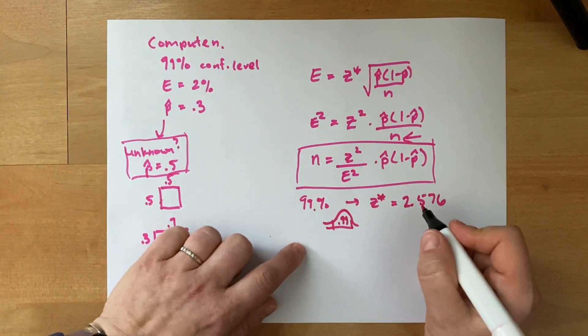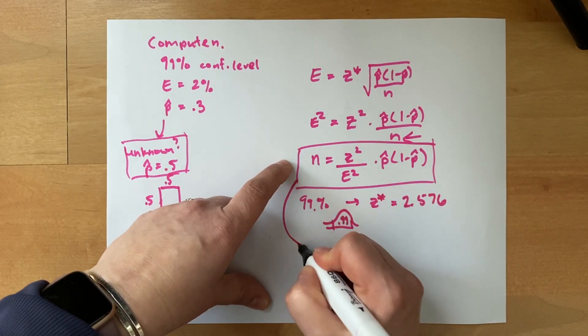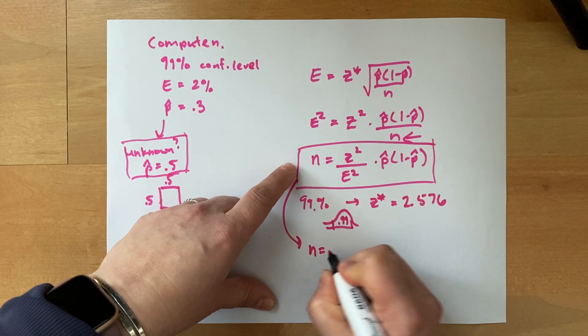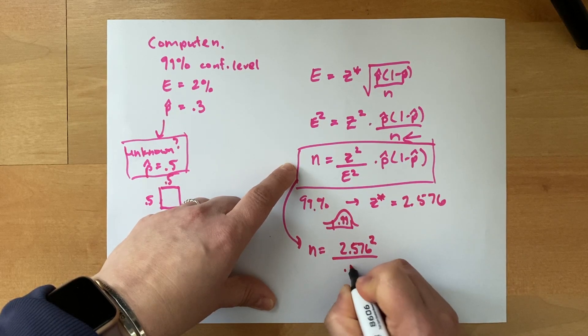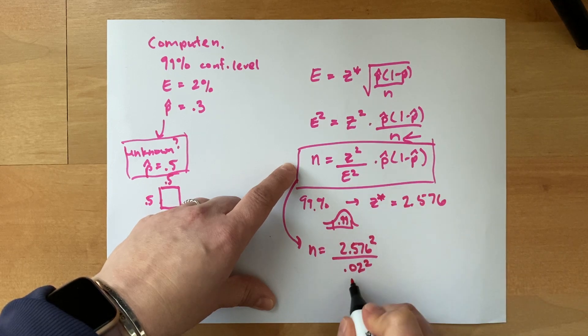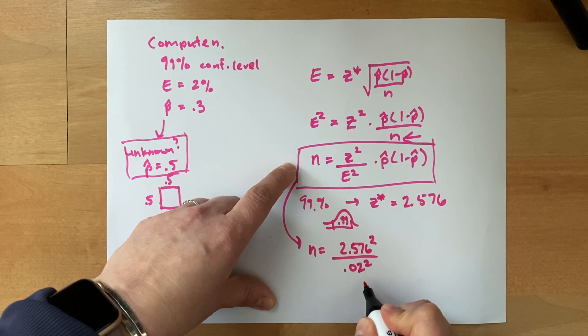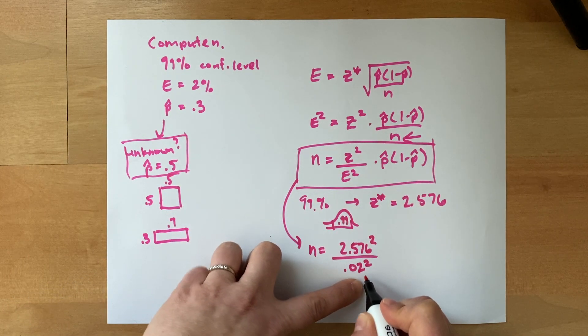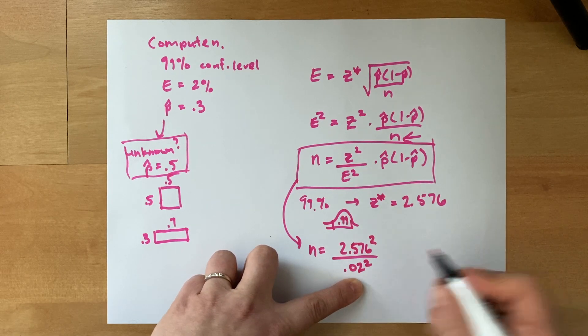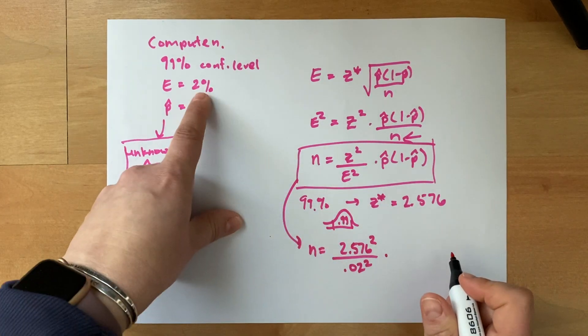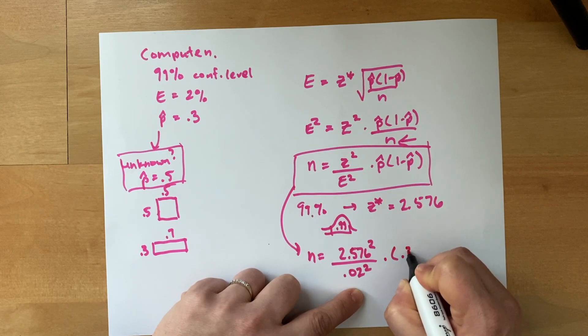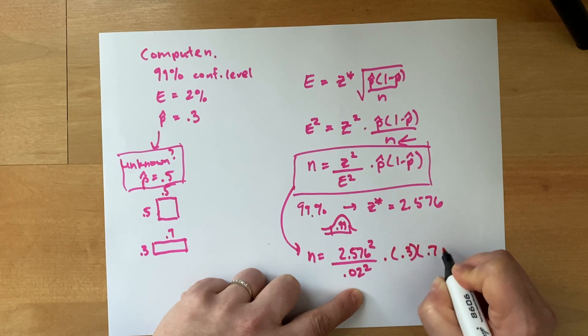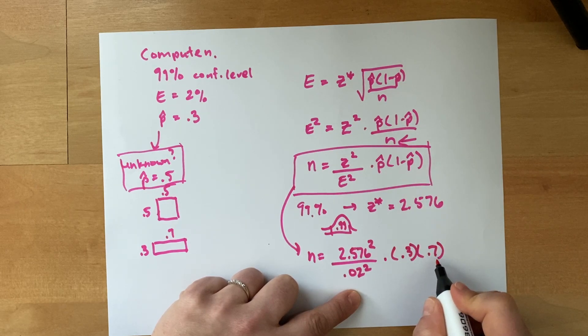So let's plug in what we know into this equation. n is equal to 2.576 squared divided by 0.02 squared. Notice that we use 0.02 as the proportion. It's not percent sign. We need to use decimals. So I've converted percents to decimals. And then plug in our proportions: 0.3 times 0.7. I did 1 minus 0.3 in my head.